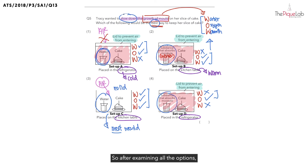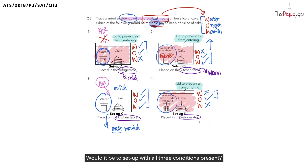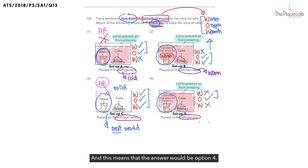So after examining all the options, can you tell me which is the best way to keep the slice of cake? Would it be the setup with all three conditions present, or would it be the setup with the least conditions present? It would be the setup with the least conditions present. And this means that the answer would be option 4.